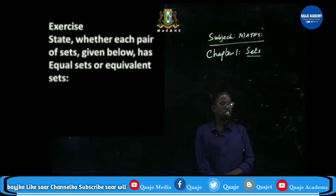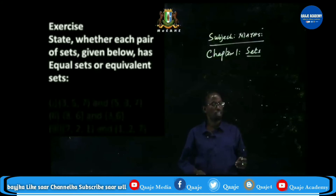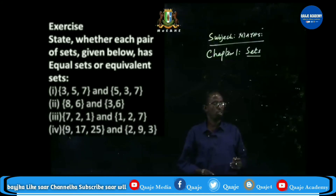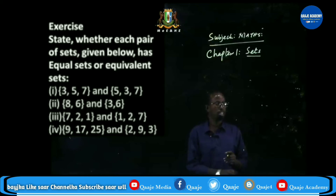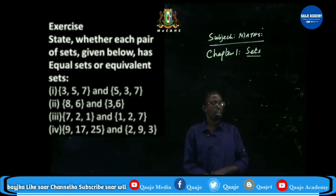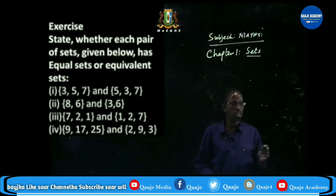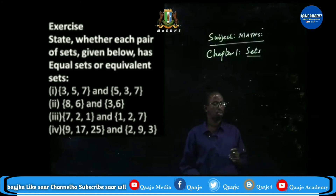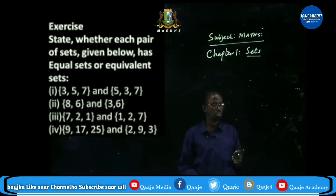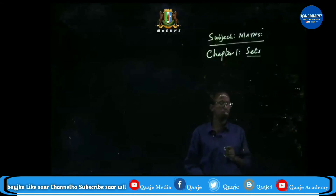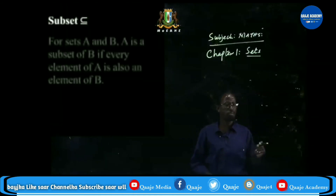Example: state whether each pair of sets is equal or equivalent. Number one: {2, 3, 5, 7} and {5, 3, 7} — they contain the same elements, so that is an equal set. Number two: {8, 6} and {3, 6} — these are equivalent because they contain different elements but the same number of elements. Number three: {7, 2, 1} and {1, 2, 7} — equal set. Number four: {9, 17, 25} and {2, 9, 3} — these are equivalent because they contain different elements but the same number.